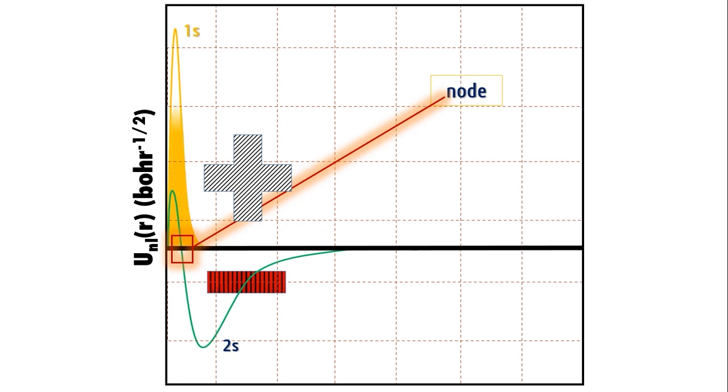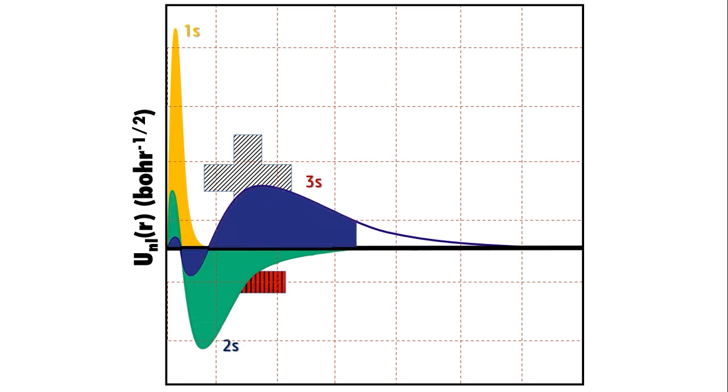And now come to 3s. The 3s state changes sign twice, that is, it exhibits two nodes so that the overlap integrals with the 1s and the 2s state vanish. Maybe I should become more careful here. See?